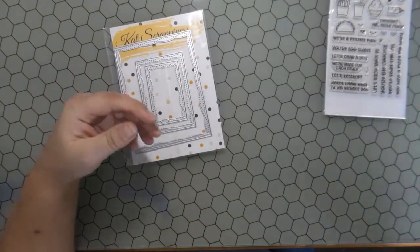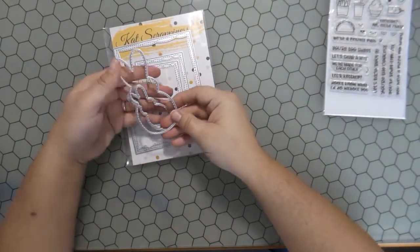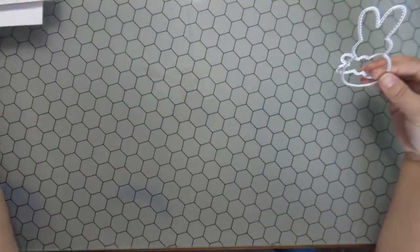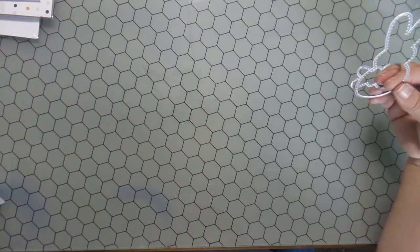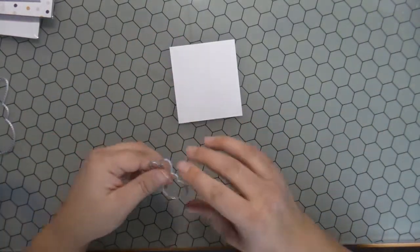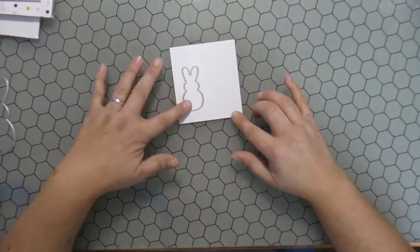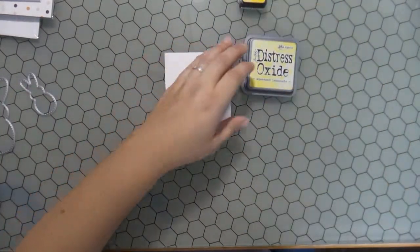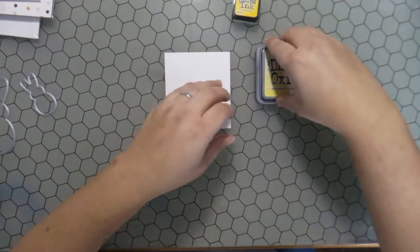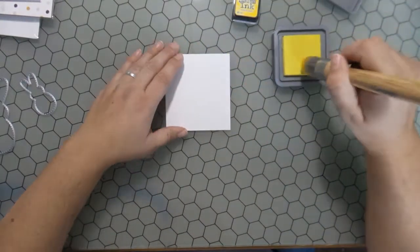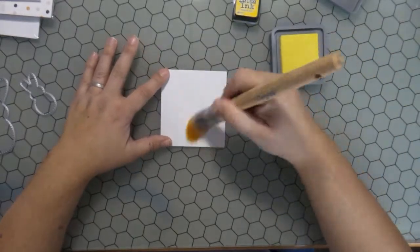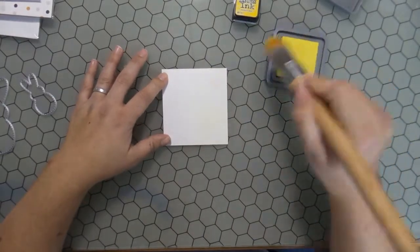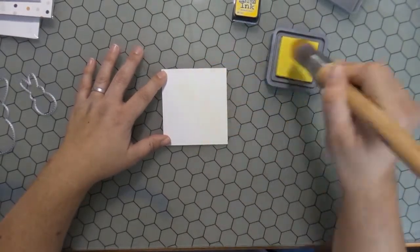I'm going to remove the two bunnies from their wrapper and I am going to use some Distress Inks and Distress Oxides to color some white paper. One section pink and one section yellow, because I want a pink base for my card and a yellow bunny that spins in the center. Here you can see I am using Squeezed Lemon Distress Oxide and Mustard Seed Distress Ink for the bunny.